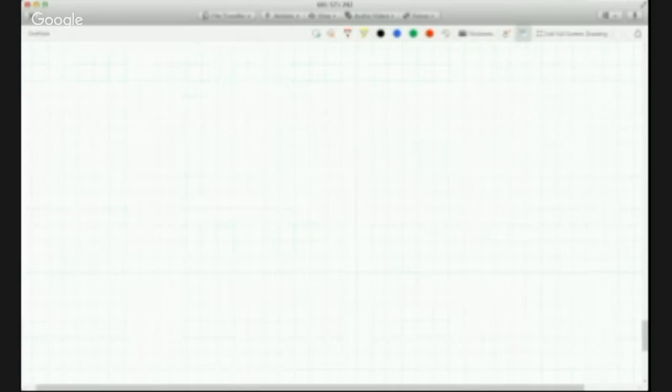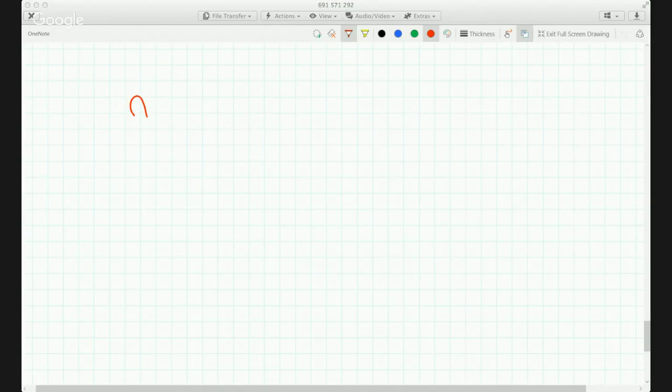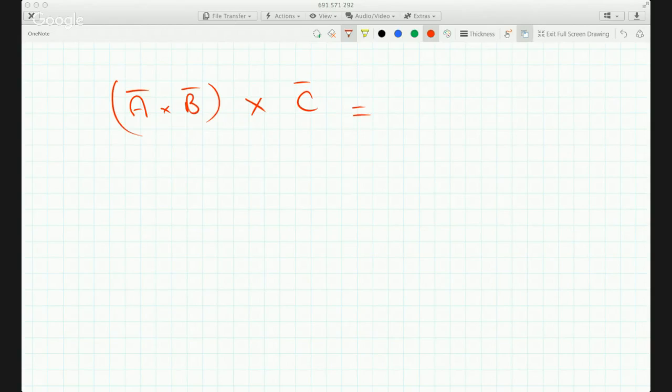So, generally speaking, A cross B cross C does not equal A cross B cross C. That is not true. So, cross products are not associative.